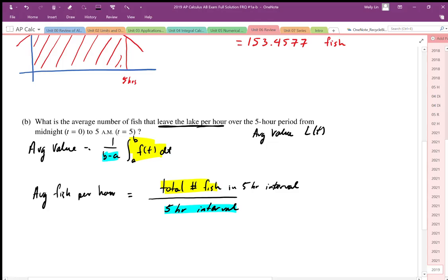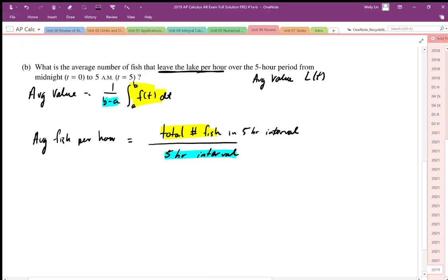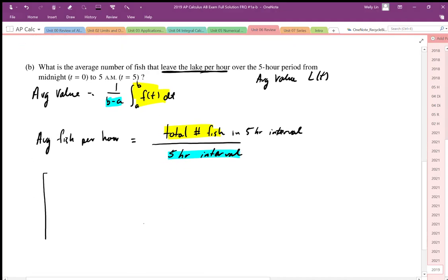Drawing this function in, we have a function here. Our L of t function kind of looks like this. At five hours, we're right there. So the total number of fish is going to be that shaded area. This represents my L of t function.